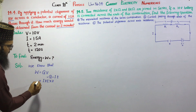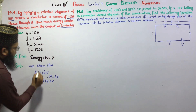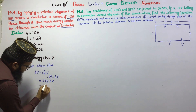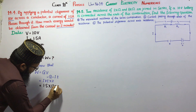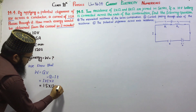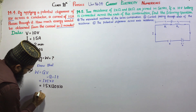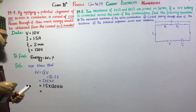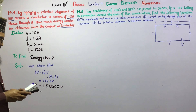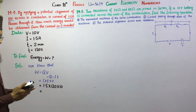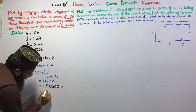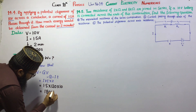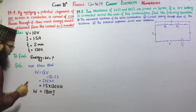Now, current given is 1.5 ampere, time is 120 seconds, multiplied by potential difference 10V. So 1.5 × 120 × 10 = 1800 Joules. This is the energy we have found.